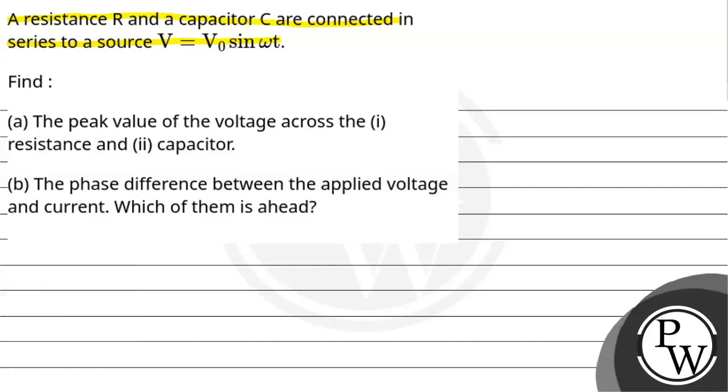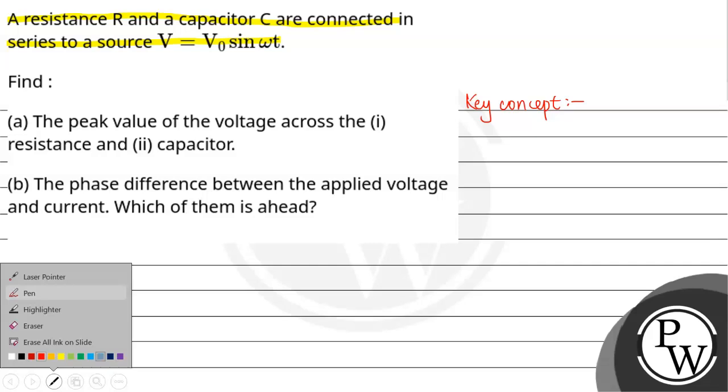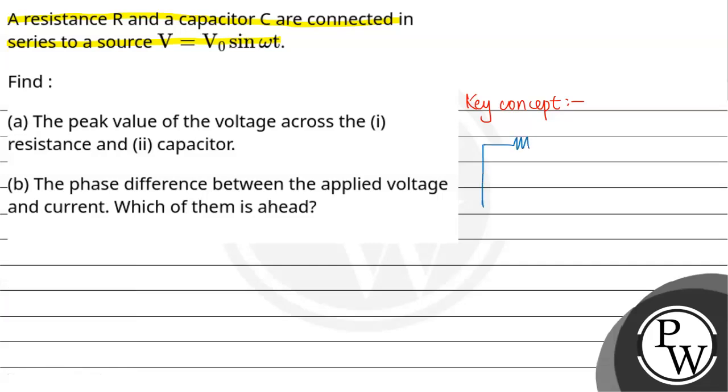Let us have the key concept for the given question. We have to take here one RC circuit. R and a capacitor, and it has an AC source connected. This is the AC source. This AC source of value V equal to V₀ sin ωt.